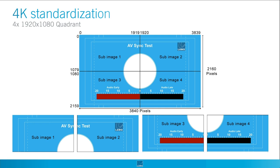Ultra HD format is defined by SMPTE 2036-1 standards. Ultra HD formats are generally associated with broadcast frame rates — 25, 29.97, 30, 59.94, and 60 frames per second — but also exist in digital cinema frame rates. The second family is 4K DCI, equal to 4 times the resolution of a 2K picture, defined by SMPTE 2048-1. 4K DCI formats are generally associated with cinema frame rates like 23.98, 24, 47.95, and 48 frames, but also exist in broadcast frame rates.